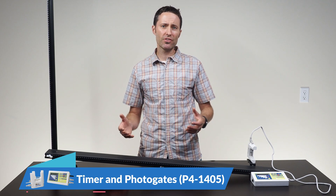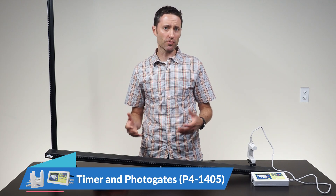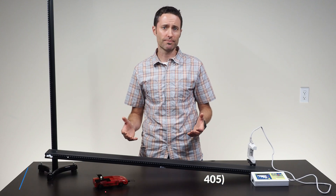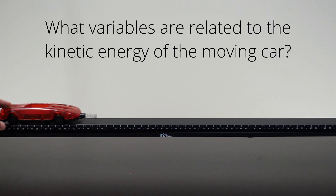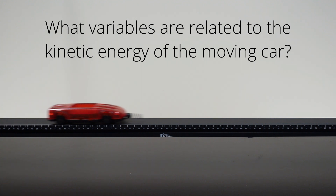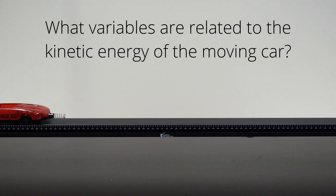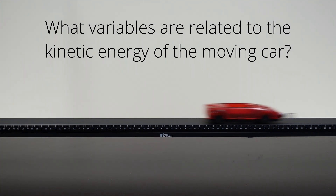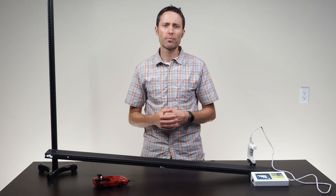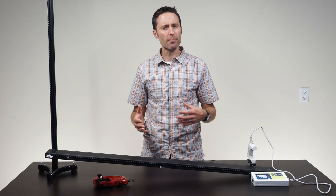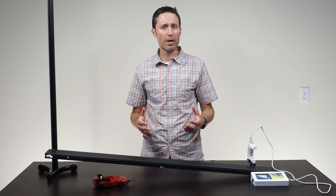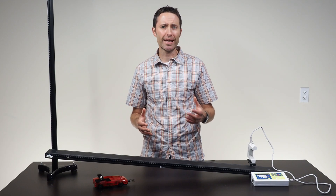This is the same equipment that can be used by students for data collection. While pushing the low-friction car on a level track, ask students what measurements or variables they think are related to the amount of kinetic energy stored by the moving car. What could be changed about the car that might change its amount of stored kinetic energy?